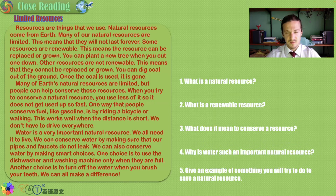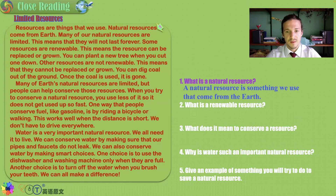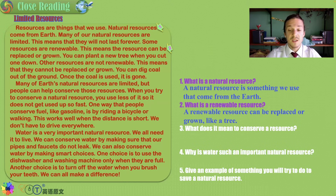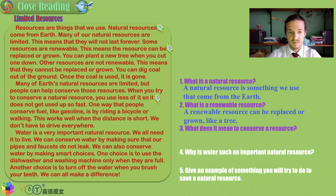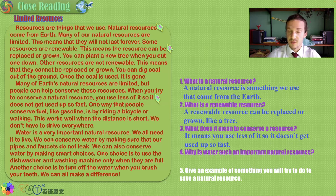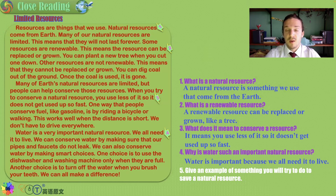So what is a natural resource? A natural resource is something we use as humans that comes from the earth. What is a renewable resource? A renewable resource is a natural resource that can be replaced or grown, like a tree. What does it mean to conserve a resource? It means you use less of it so it doesn't get used up so fast. Why is water such an important natural resource? If we didn't have water, we would die — our bodies are mostly made of water, and we need to consume water every day.